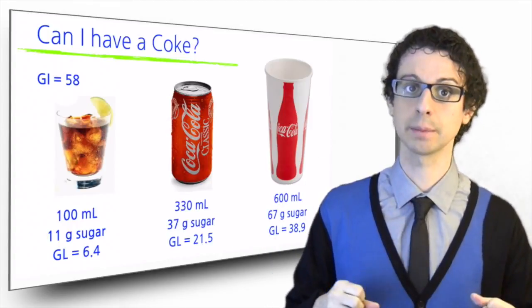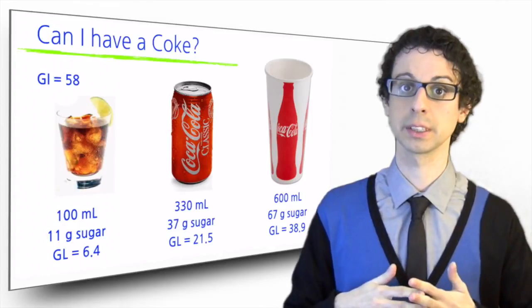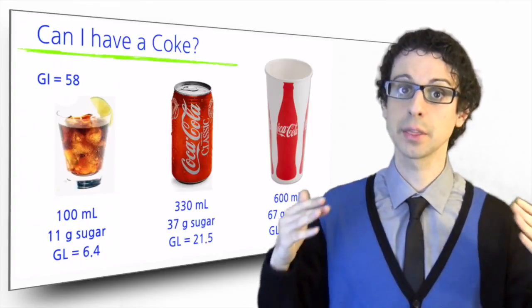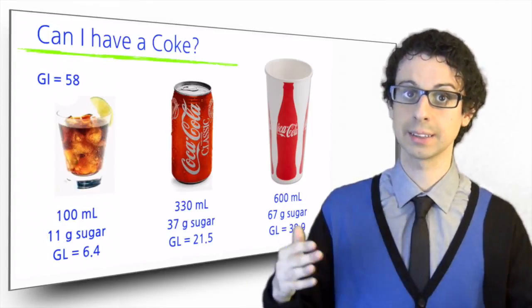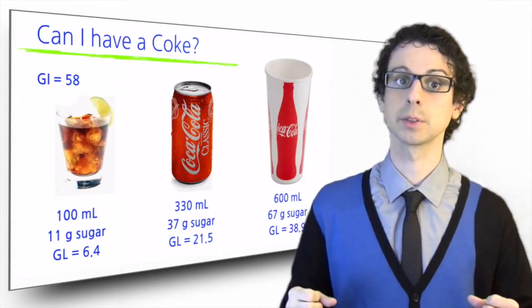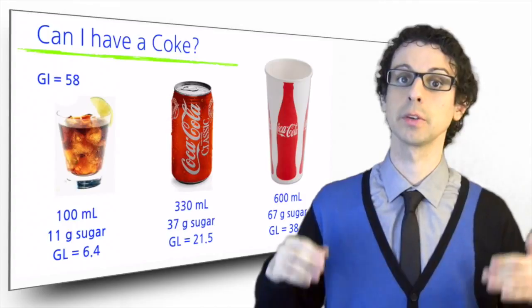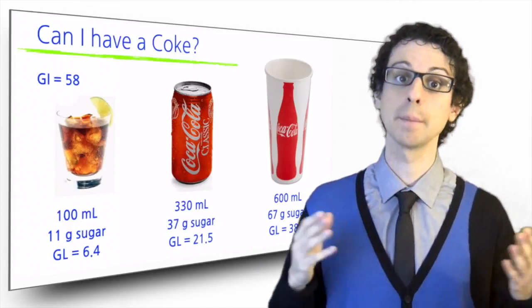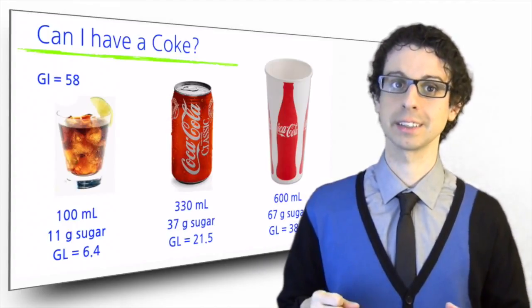But the small glass has 11 grams of sugar, with a glycemic load of 6.4. The can has 37 grams of sugar, glycemic load 21.5. And the large cup, 67 grams of sugar, and a glycemic load of 38.9. And by the way, 266 calories.